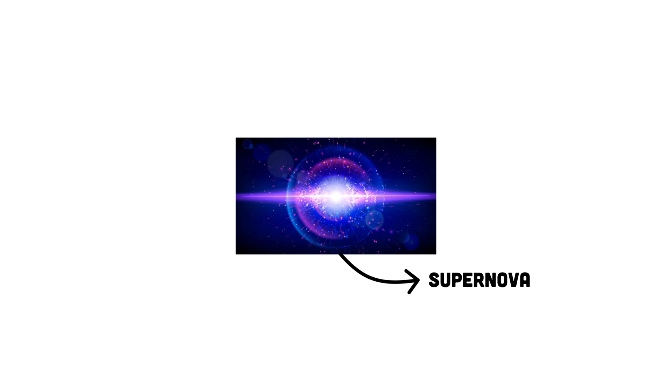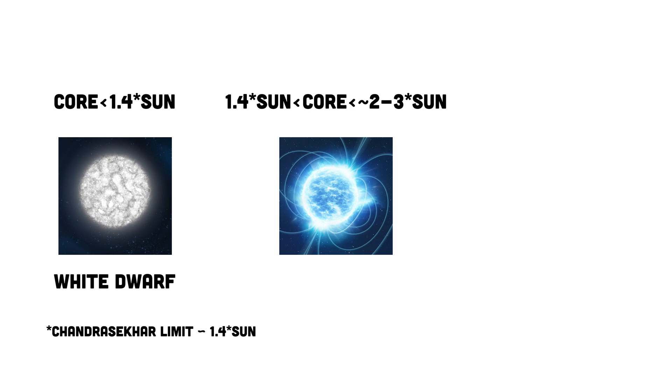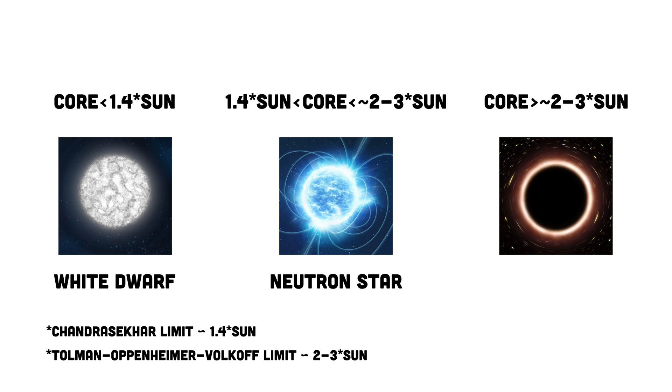What's left behind can be a few different things. A star whose core is below the Chandrasekhar limit, about 1.4 times the mass of the Sun, becomes a white dwarf. If the core's mass is above the Chandrasekhar limit but still below the Tolman-Oppenheimer-Volkoff limit, estimated between two to three solar masses, it will become a neutron star. If the core exceeds the Tolman-Oppenheimer-Volkoff limit after the supernova, it will collapse into a black hole.